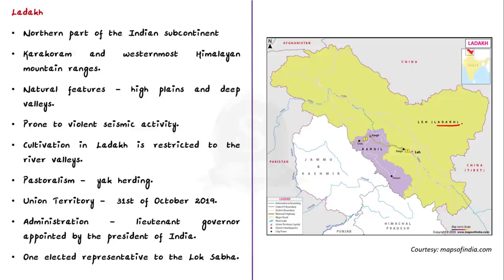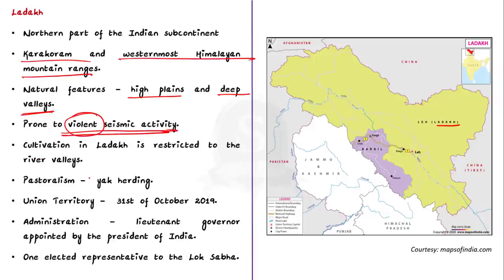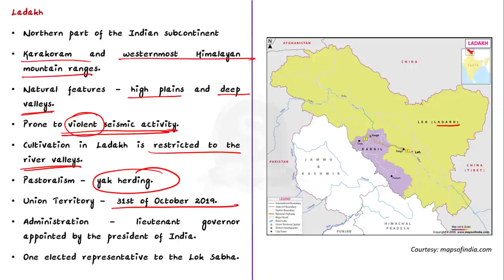Ladakh is one of the highest regions of the world, with natural features consisting of high plains and deep valleys. The region is prone to violent seismic activity, and light to moderate tremors are common. Cultivation in Ladakh is restricted to river valleys where it consists of small irrigated plots. However, pastoralism — notably yak herding — has been a vital feature of the Ladakh economy. Ladakh became a union territory on 31st October 2019 and is administered by a Lieutenant Governor appointed by the President of India. Ladakh sends one elected representative to the Lok Sabha and is served by the High Court of Jammu and Kashmir Union Territory.